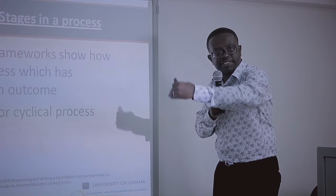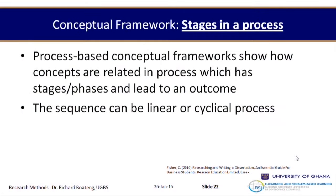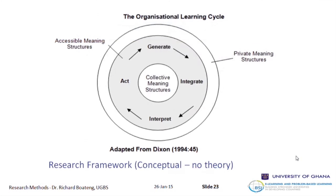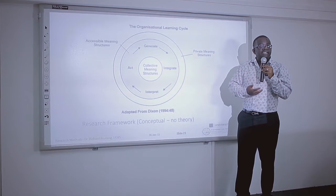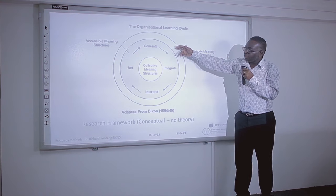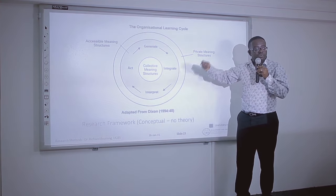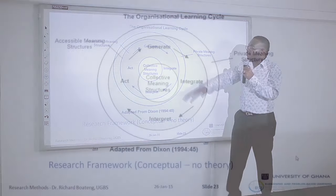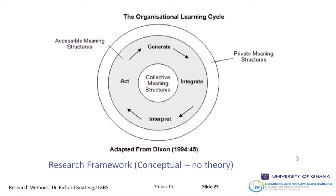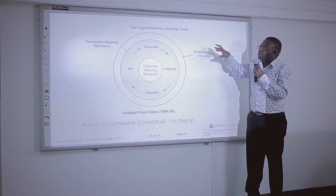A conceptual framework can also come in stages or a process — a sequence of steps or phases that can be linear or cyclical. For example, Dixon's 1994 organizational learning cycle identifies four steps for disseminating knowledge in organizations: generating information from different sources, integrating it within the organizational context, interpreting it, and giving employees the ability to act on it. This was modified from the theory of meaning structures, which holds that learning occurs when we make meanings accessible to others.